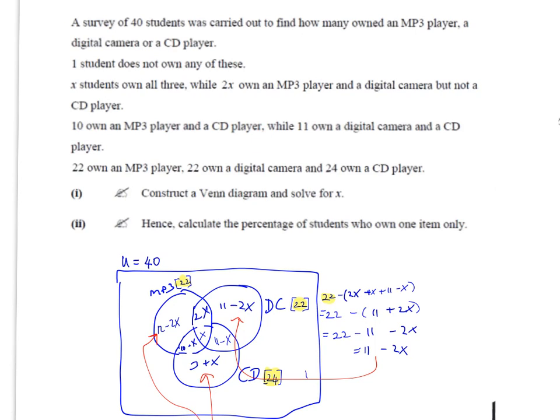Similarly here, it says 11 own a digital camera and a CD player, so that means 11 belongs to this intersection here. But we've already got x in here, so we have to take it from 11 to put it in here.